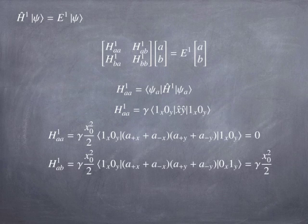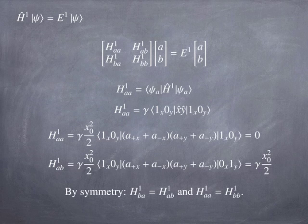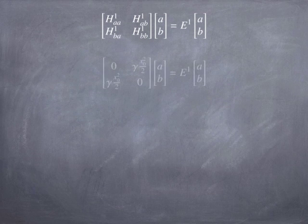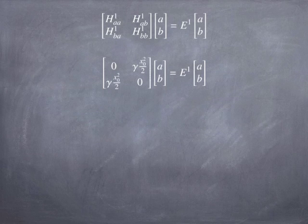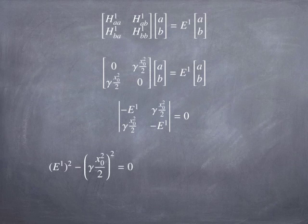For H1_AB, A⁺_x acts on |0⟩ to give |1⟩, which matches ⟨1| on the left — so it's not zero. The x and y operators each contribute a factor, giving H1_AB = γx₀²/2. By symmetry, H1_BA = H1_AB and H1_AA = H1_BB. Writing out the matrix and moving E1 to the other side, the eigenvalue determinant must equal zero, which means E1² = (γx₀²/2)², so E1 = ±γx₀²/2.